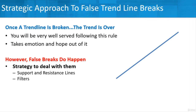Once again, the hard, fast rule: once a trend line is broken, no matter how it's broken, the trend is over. You're well-served following that rule — it takes emotion, hope out of it, takes a lot of extra analysis out of it. So nothing wrong with that. However, false breaks do happen, frequently happen. So there might be ways that we can use a strategic approach to really deal with them and help us be better traders.